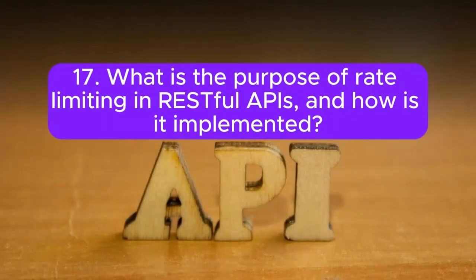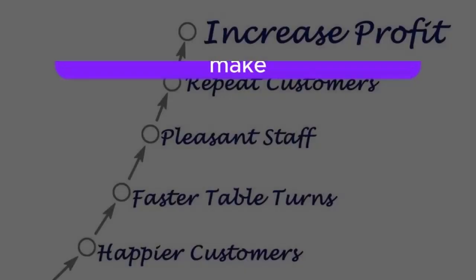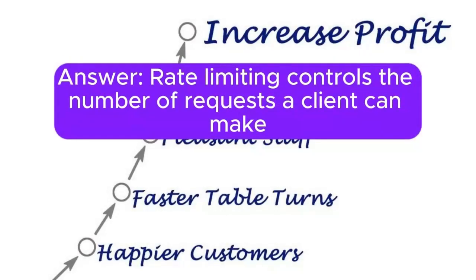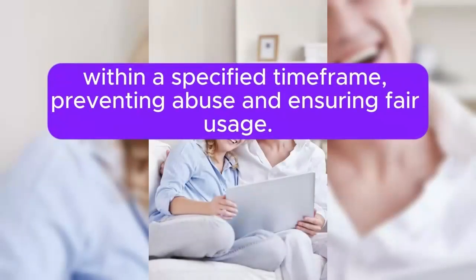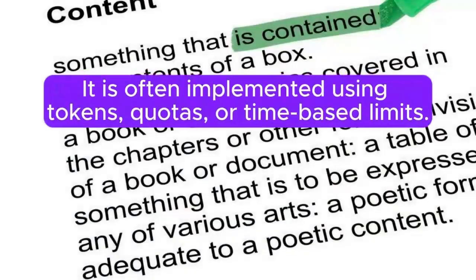Question 17: What is the purpose of rate limiting in RESTful APIs, and how is it implemented? Rate limiting controls the number of requests a client can make within a specified time frame, preventing abuse and ensuring fair usage. It is often implemented using tokens, quotas, or time-based limits.